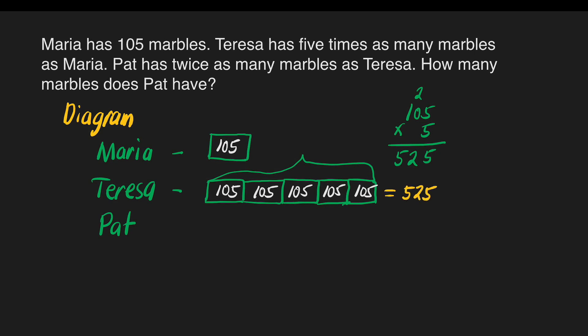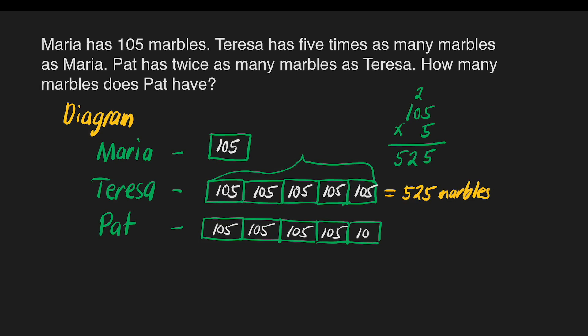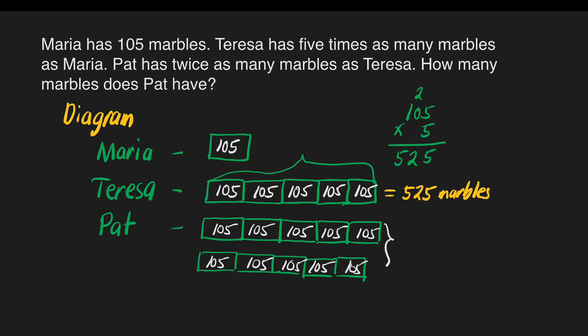Teresa has 525 marbles. Now for Pat, it says Pat has twice as many marbles as Teresa. Since Teresa has 5 boxes, twice that means we draw 10 boxes total — the same 5 boxes twice, with 105 in each box. This is twice as many as what Teresa has.